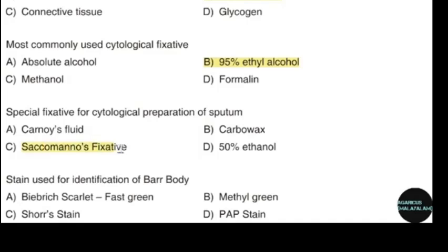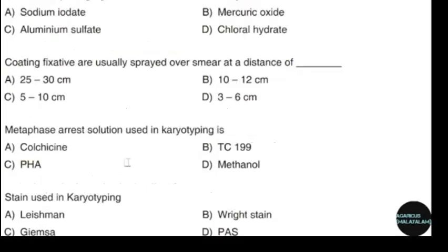Special fixative for cytological preparation of sputum. Correct answer: option D — Saccomanno fixative. Chemical ripening agent used in Harris hematoxylin. Correct answer: option A — Sodium iodate.